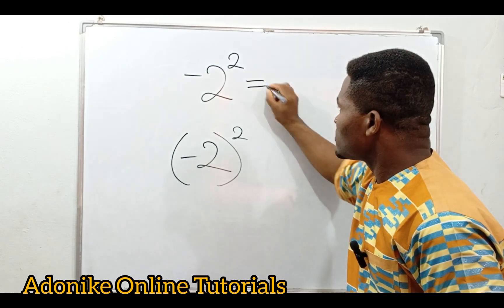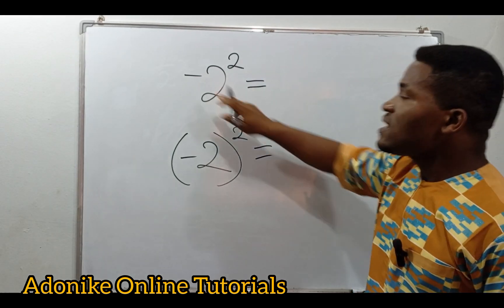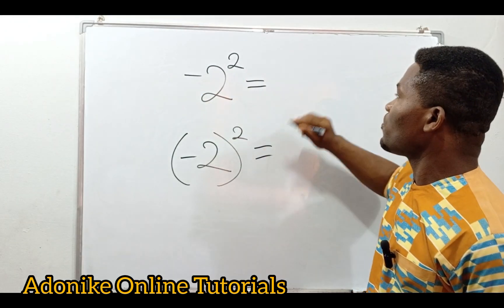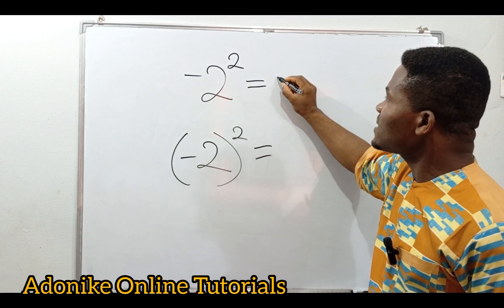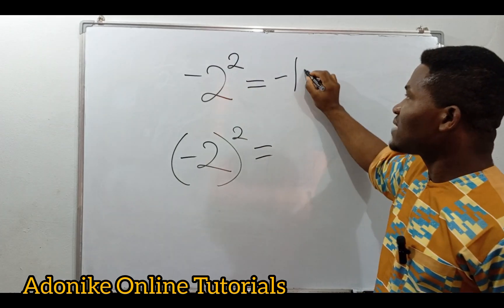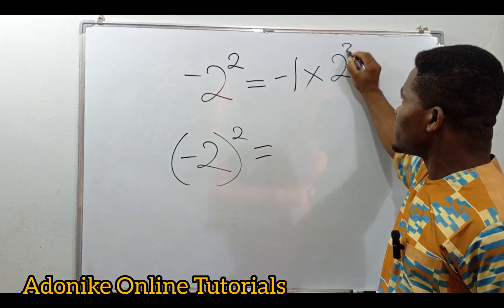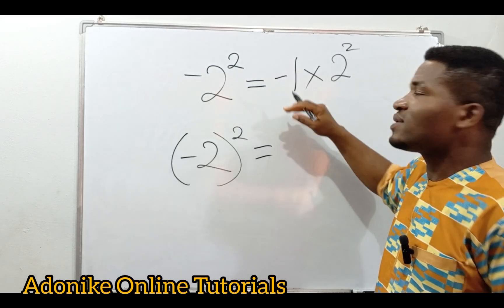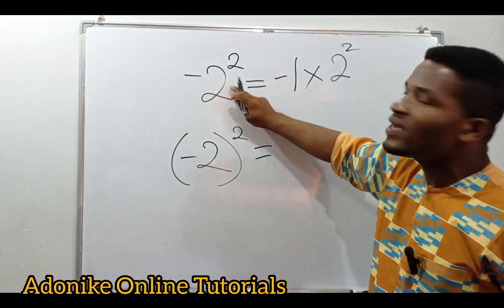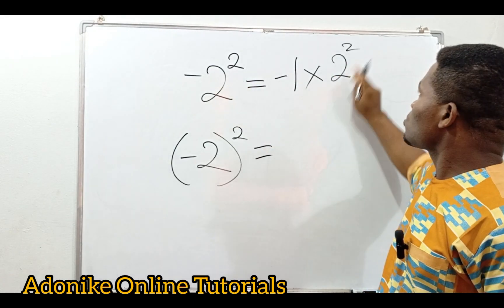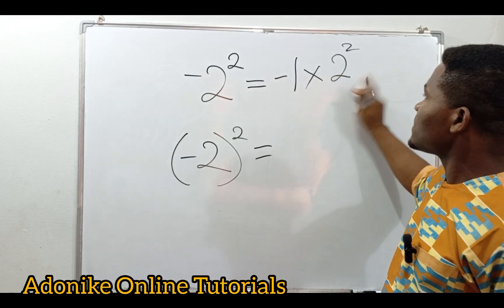Let me show you how the difference is applied. Here we have minus two raised to the power of two. This is the same as saying minus one times two squared. The square is only affecting the two, so that will give you four. So minus one times four gives you minus four.